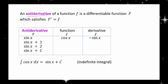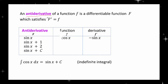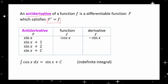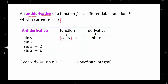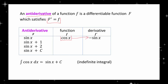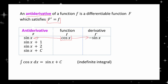An antiderivative of a given function f is a differentiable function whose derivative is the given function. For example, the derivative of cosine is the function negative sine. On the other hand, one antiderivative of cosine is the function sine.